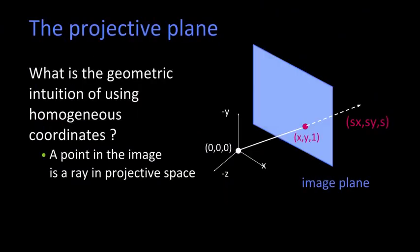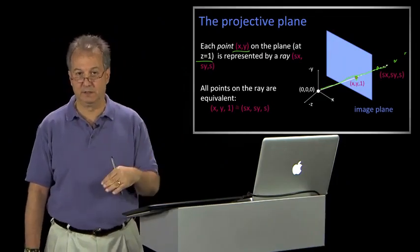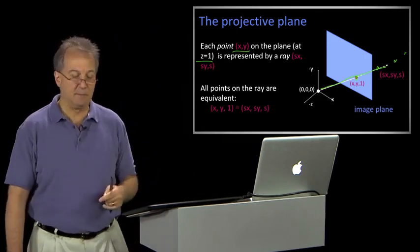What is the geometric intuition of using homogeneous coordinates? Basically, the idea is that a ray in space is mapped to a point in the image. Here you see a ray that intersects the image plane at z equals 1. Every point (x,y) on the image plane at z equals 1 is represented by this ray, and it intersects the image plane at (x, y, 1). But any point on this ray (sx, sy, s) would, when projected through the center of projection, intersect the image plane at the same location. That's what it means to be projectively similar - the relationship between these rays and the points in the image.